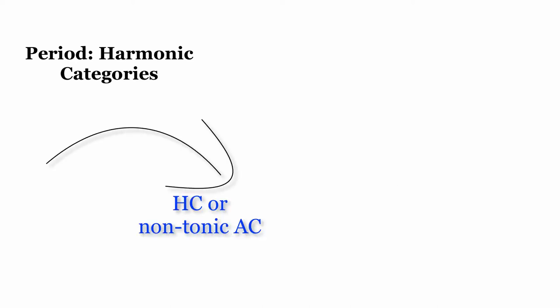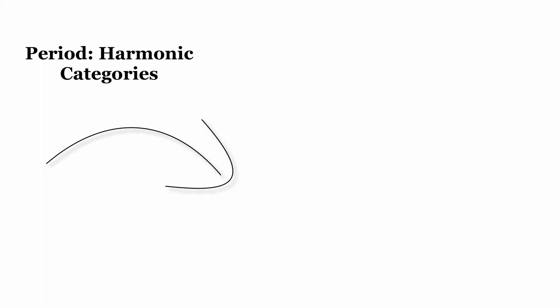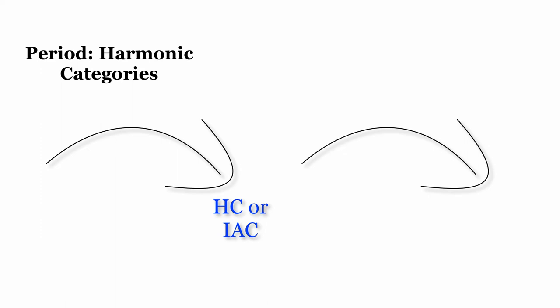When the first phrase ends with a half cadence, or on an authentic cadence somewhere other than the tonic, and the second phrase begins somewhere other than the tonic before concluding with a stronger cadence in the home key, it's called a continuous period. When the first phrase ends with a half cadence or imperfect authentic cadence, and the second phrase modulates and concludes with an authentic cadence in a new key, it's called a progressive period.